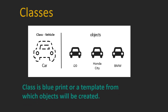A class is a blueprint or a template from which individual objects can be created. From a class, you can create any number of objects. So a class is a blueprint or template from which individual objects can be created.